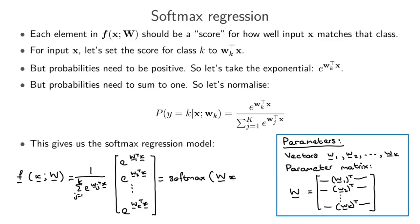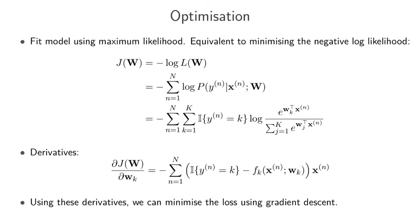To fit this model we use maximum likelihood estimation, as we did for binary logistic regression, which is equivalent to minimizing the negative log-likelihood. The negative log-likelihood of the parameter matrix W is a product over training items that converts into a sum over logs. For each training item we sum over the possible classes, using an indicator variable that equals 1 if the current training item belongs to that class, and 0 otherwise, picking out the log-probability for the correct class.